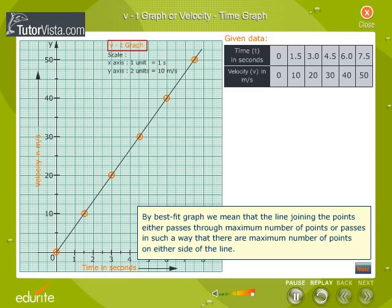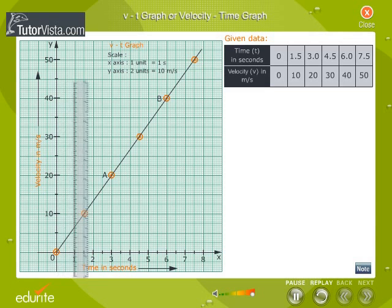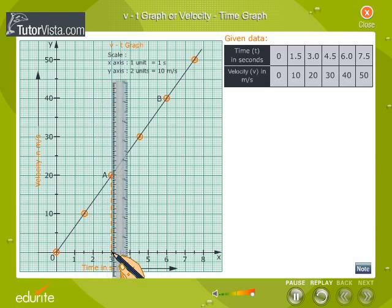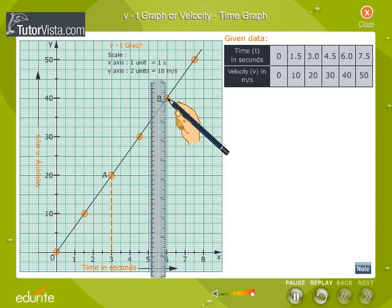Give a title for the graph. Consider any two points A and B on the straight line graph. Draw perpendiculars from A and B to the x and y axes and construct a right angle triangle ABC.